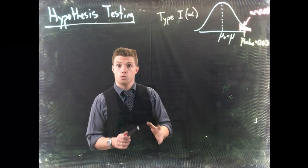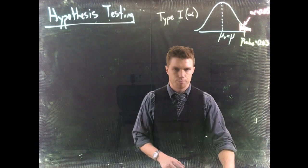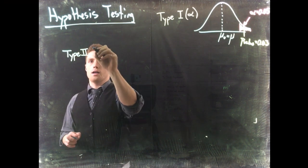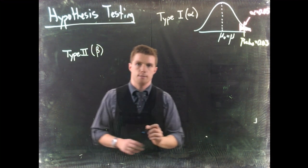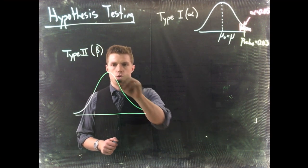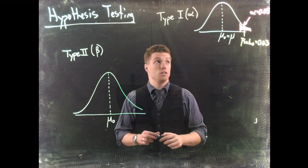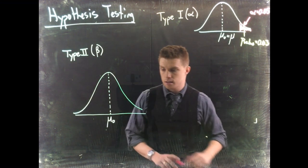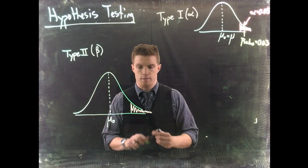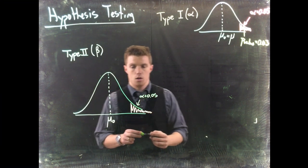Now let's talk about Type 2 error. This one is much more in depth and I'll try to present it as clearly as possible. Type 2 error is called beta. Let's draw our original distribution — the hypothesis is that the true mean is right here — and we'll still reject at alpha equals 0.05.